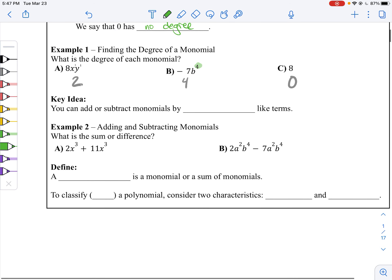Now the key idea of the day is that if you want to simplify a polynomial, you can add or subtract monomials, the terms of a polynomial, by just combining like terms. And remember that like terms have the same degree, the same variables.